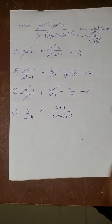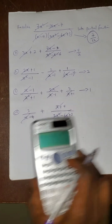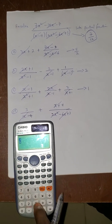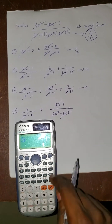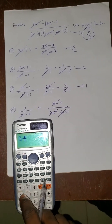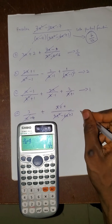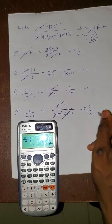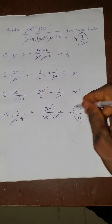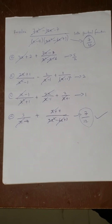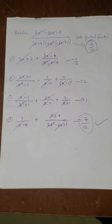And now the last option. Cancel this, cancel this, cancel this, cancel this. The remaining values will be 3 over minus 4, then plus 4 over 3. Press equals. You can see that the last one gives us 7 over 12. That shows that the right answer is Option D, because it is the only one that gave us the same result as the question.